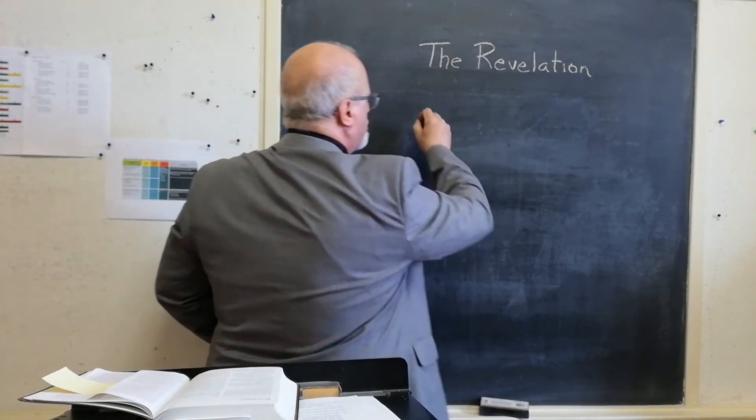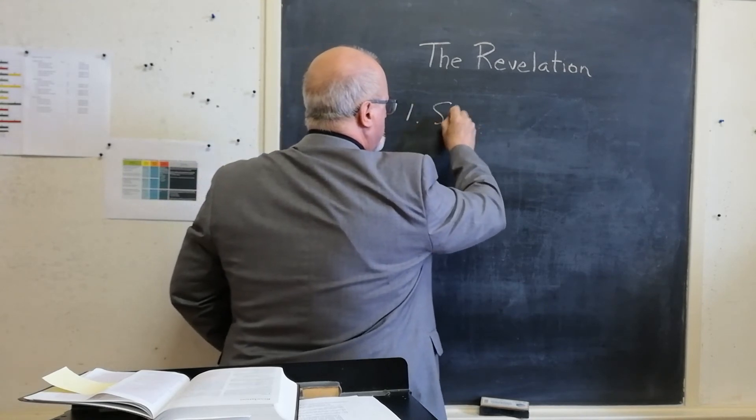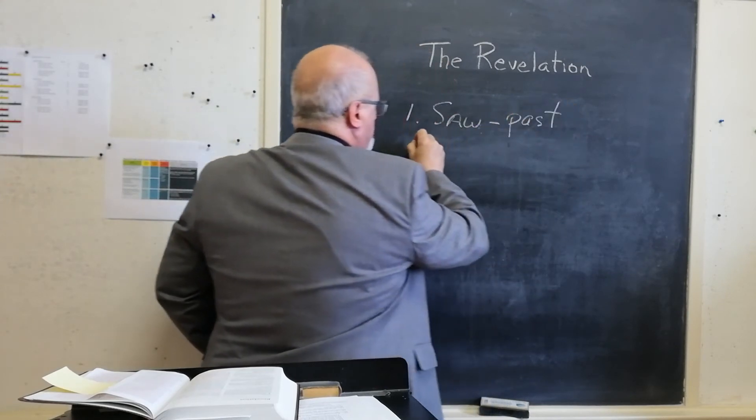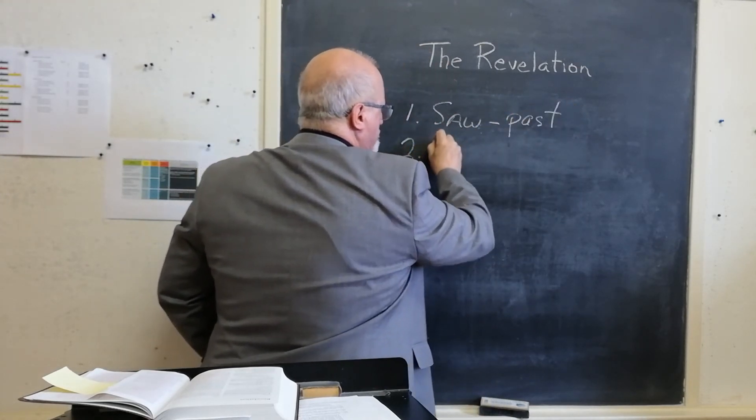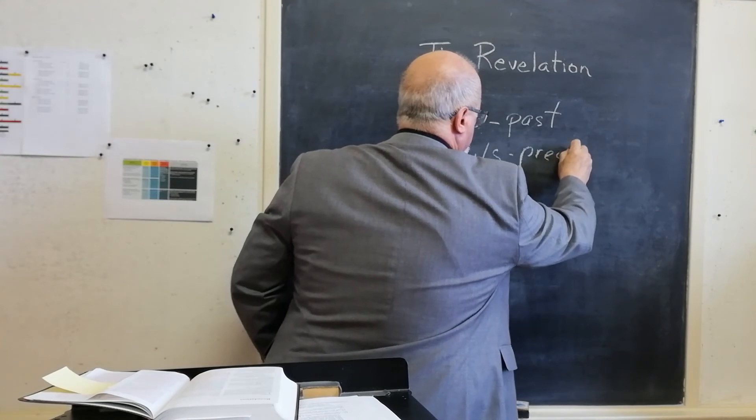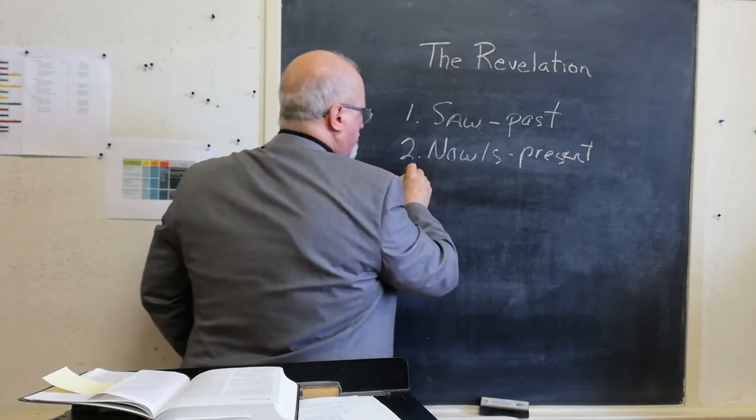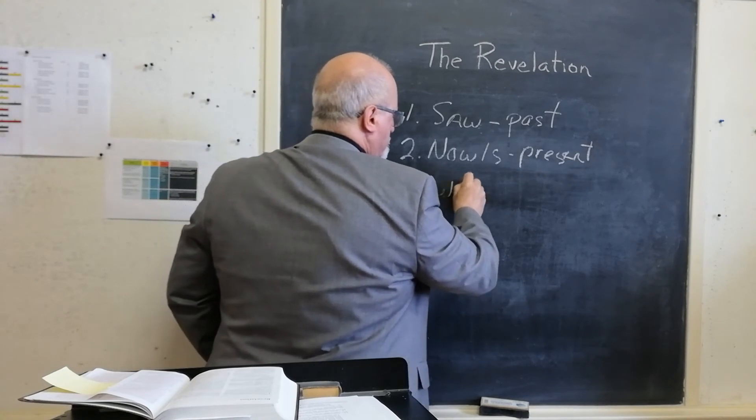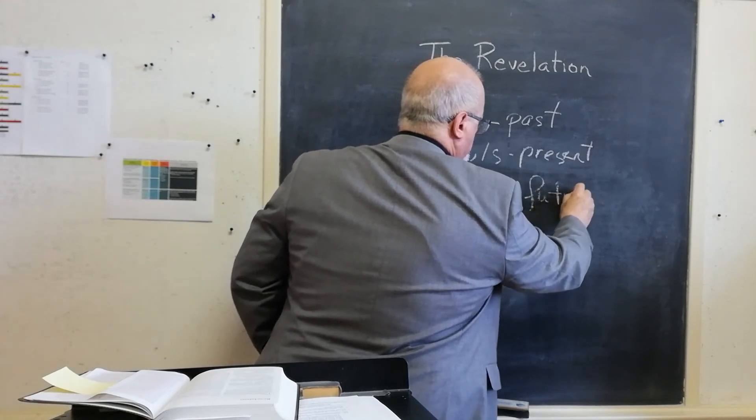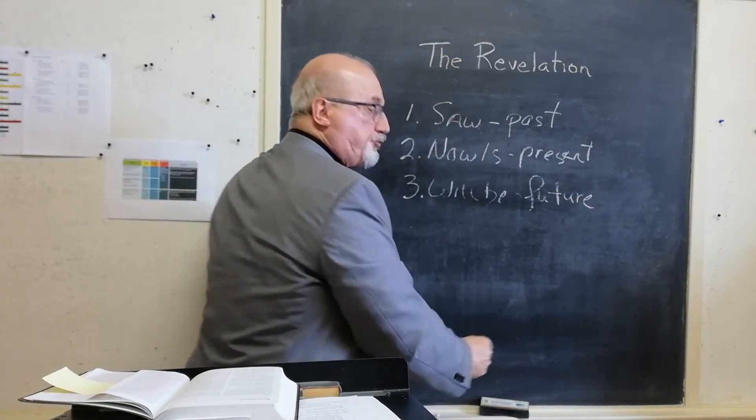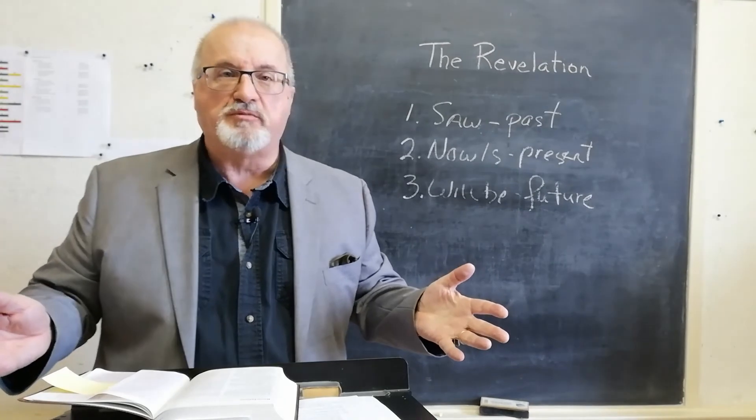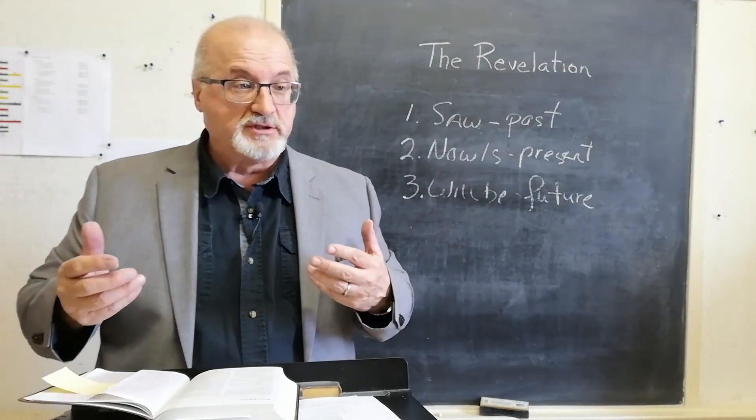He's going to be writing on, number one, what he saw. That's past. What now is. That's the present. And thirdly, what will be. Future. So there's three tenses that John is going to be writing about.